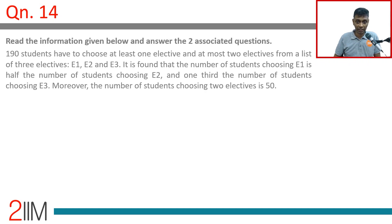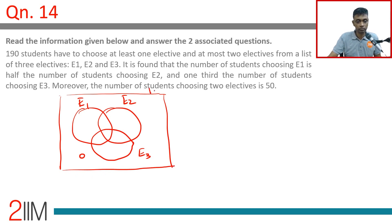190 students have to choose at least one elective and at most two electives from a list of three electives E1, E2, and E3. This is a classic Venn diagram question. We can understand this as E1, E2, E3, where we have to choose at least one, so outside is zero, and total is 190. At most two, so the center intersection is zero.